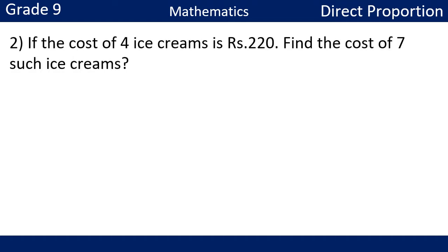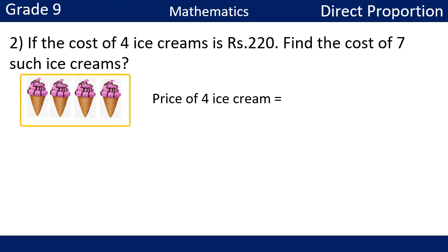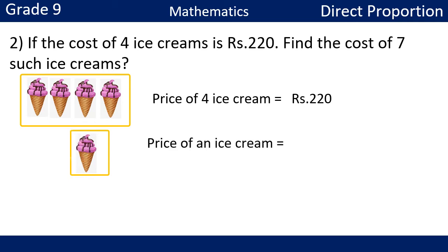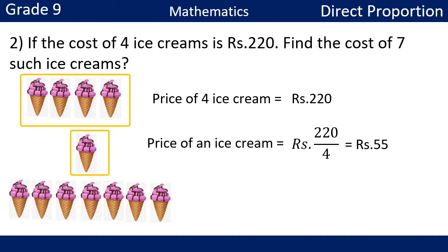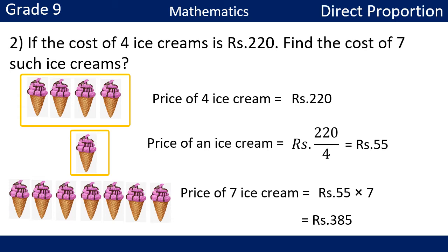Second example: if the cost of four ice creams is 220 rupees, find the cost of seven such ice creams. The cost of four ice creams is 220 rupees. The price of one ice cream is 220 divided by 4, which equals 55 rupees. Then the price of seven ice creams is 55 multiplied by 7, which equals 385 rupees.